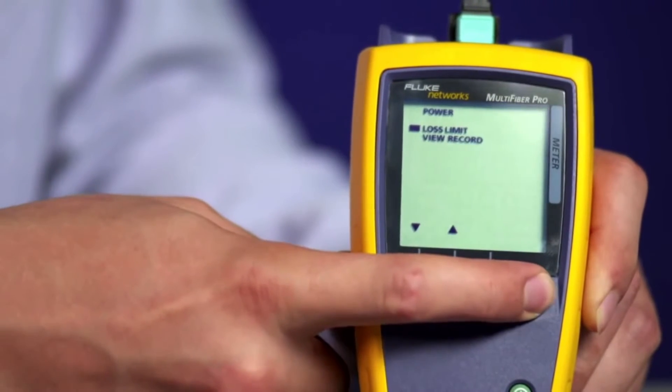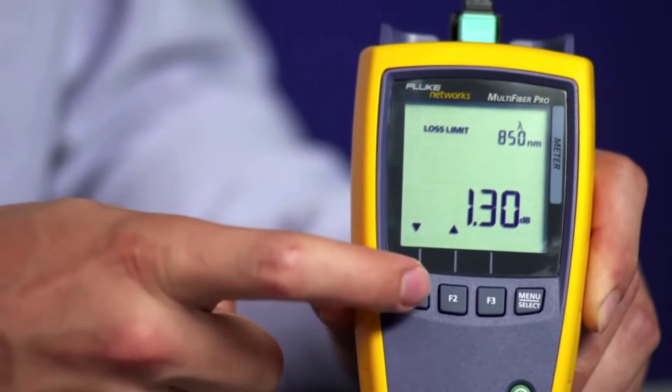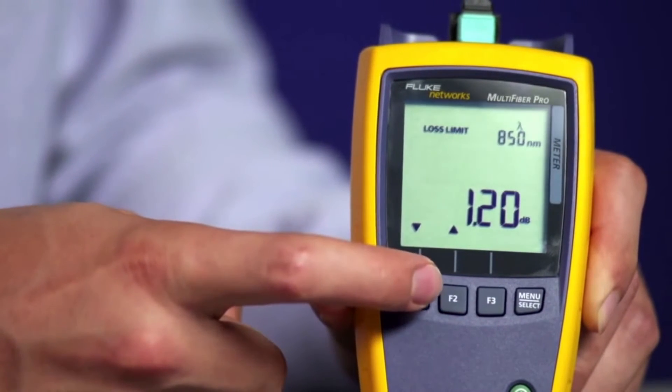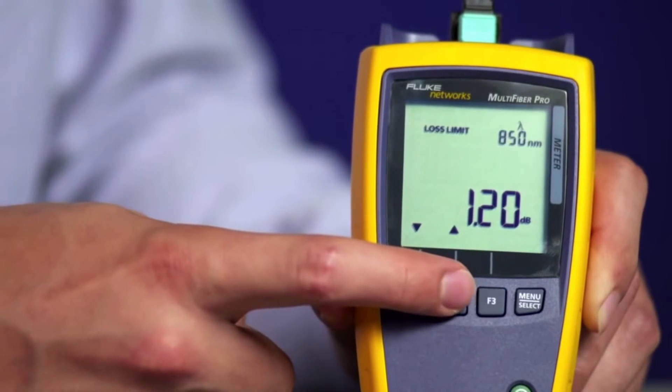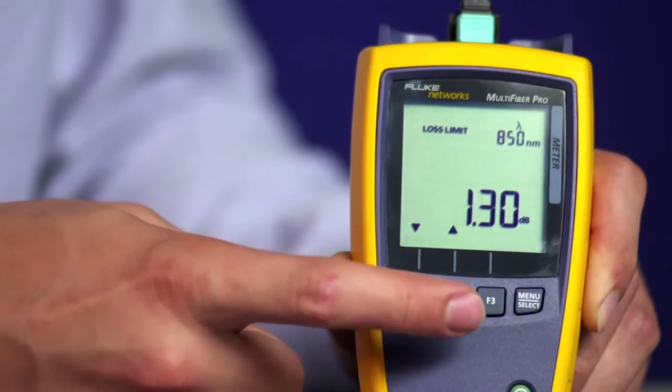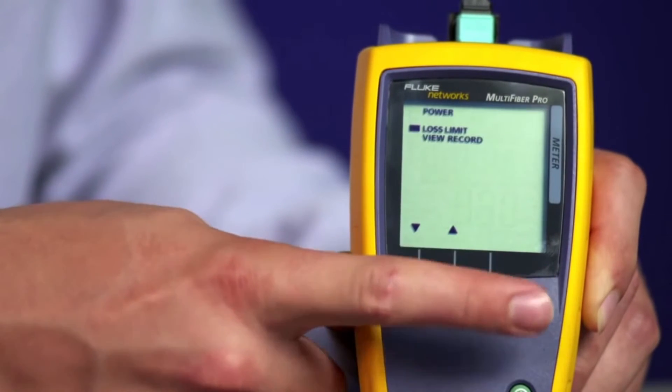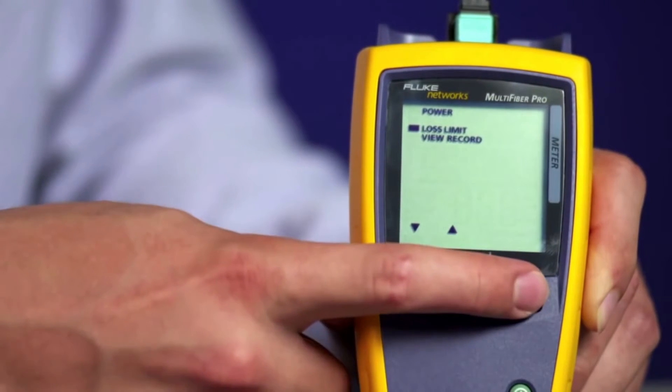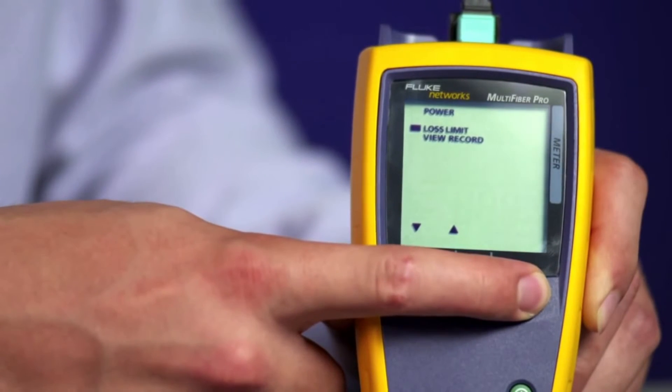Press MENU again and use the F1 or F2 key to set your designated Loss Limit value. Now press MENU once to save, and press and hold MENU to go back to the main screen.